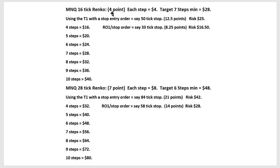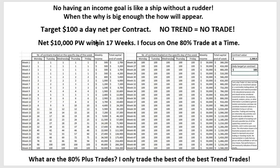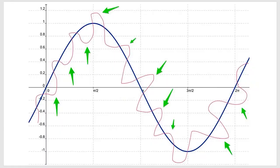We're going to be focused on the 16-tick, averaging between $20 and $28 per trade. Taking seven steps, you basically only need four of those a day to achieve your $100 daily target, which gets you to $10,000 earnings a week in 17 weeks. In 17 weeks, your capital has grown to $57,000 — and you can see the massive compounding effect.